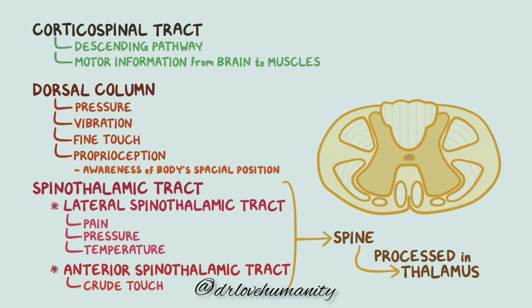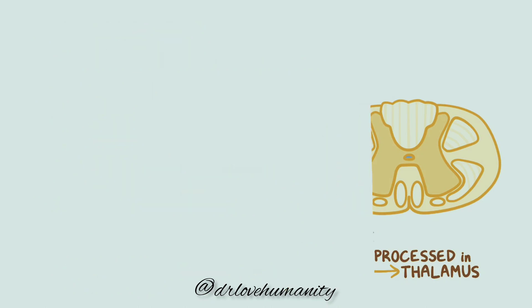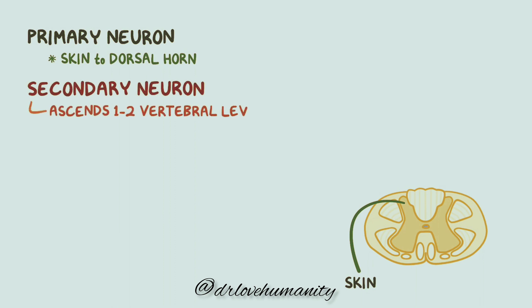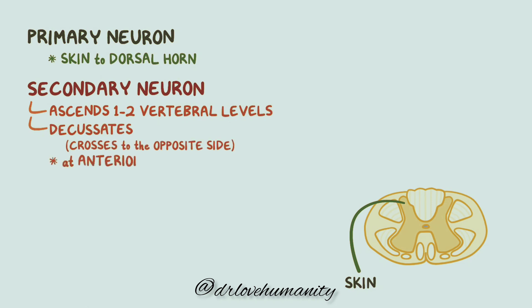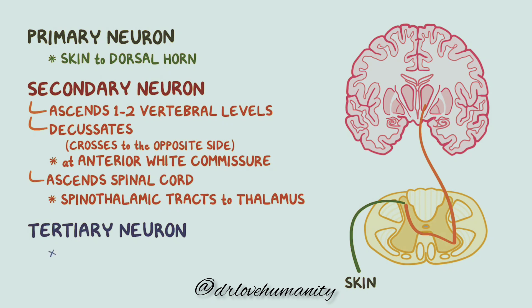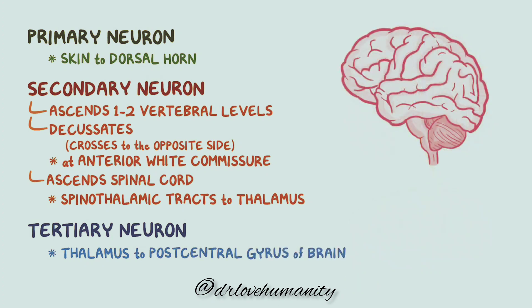This happens through three neurons that synapse with one another. First, a primary neuron carries sensory information, like pain, from the skin to the dorsal horn of the spinal cord, where it synapses with a secondary neuron. The secondary neuron ascends one to two vertebral levels and decussates, or crosses to the opposite side of the spinal cord via an area of white matter called the anterior white commissure. The secondary neuron then ascends up the length of the spinal cord via the anterior or lateral spinothalamic tracts, eventually synapsing at the ventral posterior nuclei of the thalamus. Finally, a third neuron arises from nuclei in the thalamus and carries the signal to the primary sensory cortex, or the postcentral gyrus of the brain, where the sensory signal is interpreted.